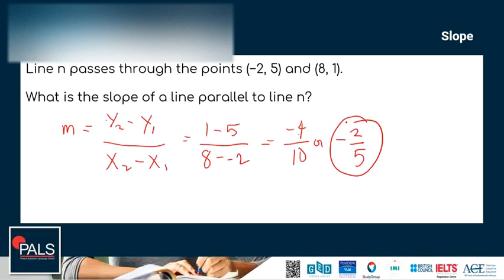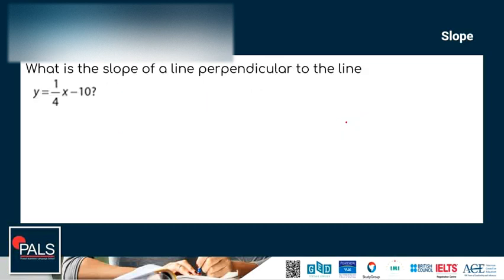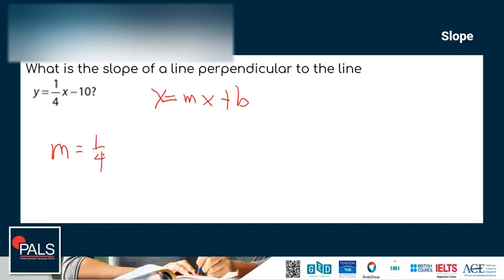Now let's look at another example. What is the slope of a line perpendicular to the line y equals 1/4 x minus 10? Since this equation is already in the form y equals mx plus b, the slope is 1/4. The slope of a line perpendicular to this line is the negative reciprocal, so the perpendicular slope is negative 4.